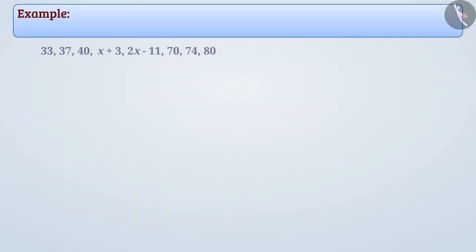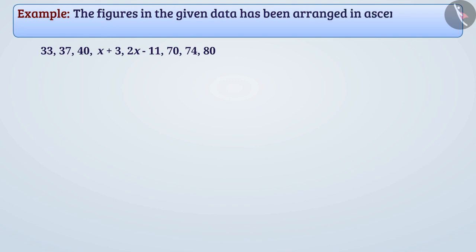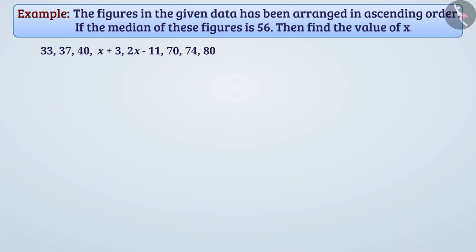Next example: The figures in the given data have been arranged in ascending order. If the median of these figures is 56, then find the value of x. The total number of observations in the data shown is 8.